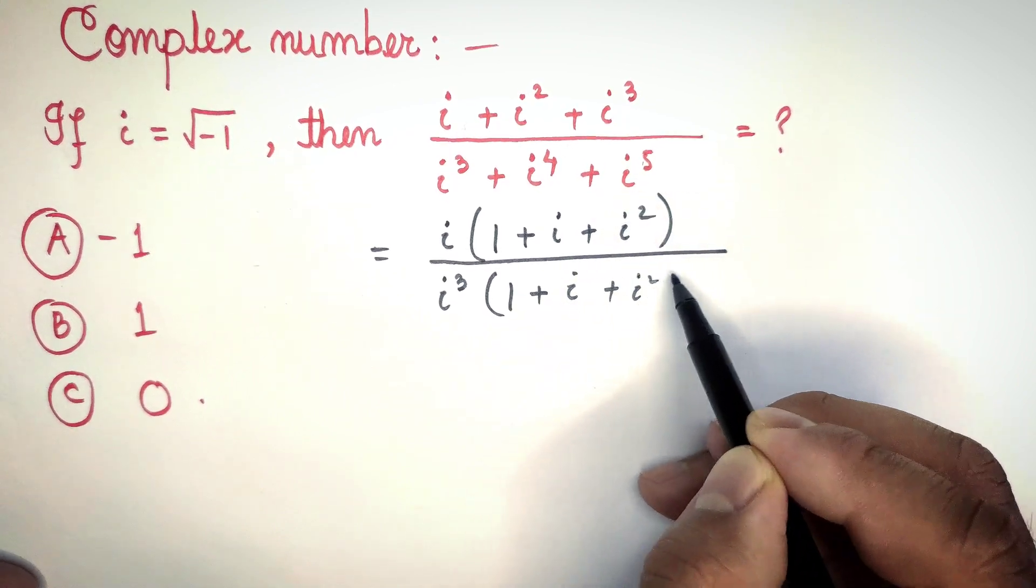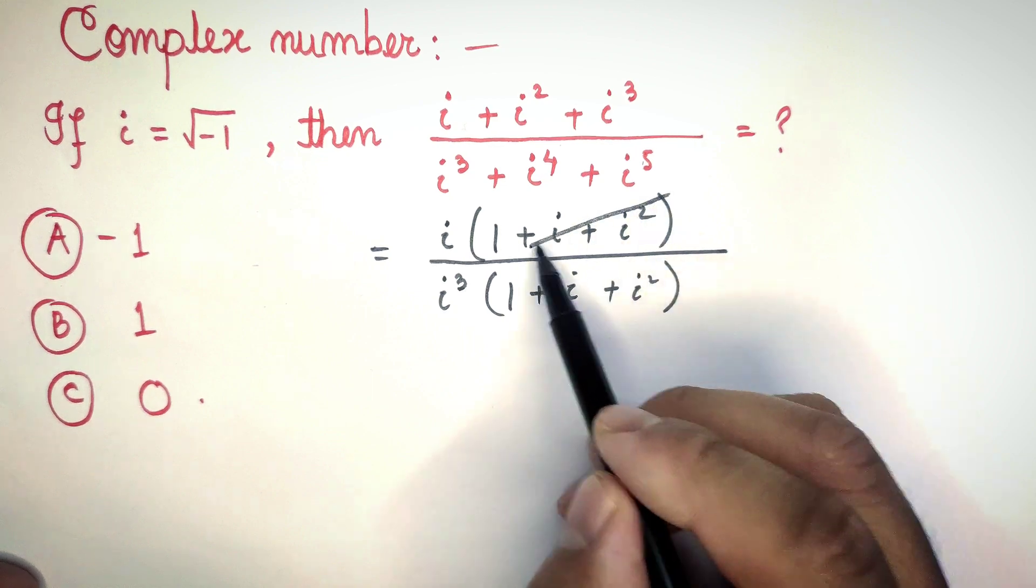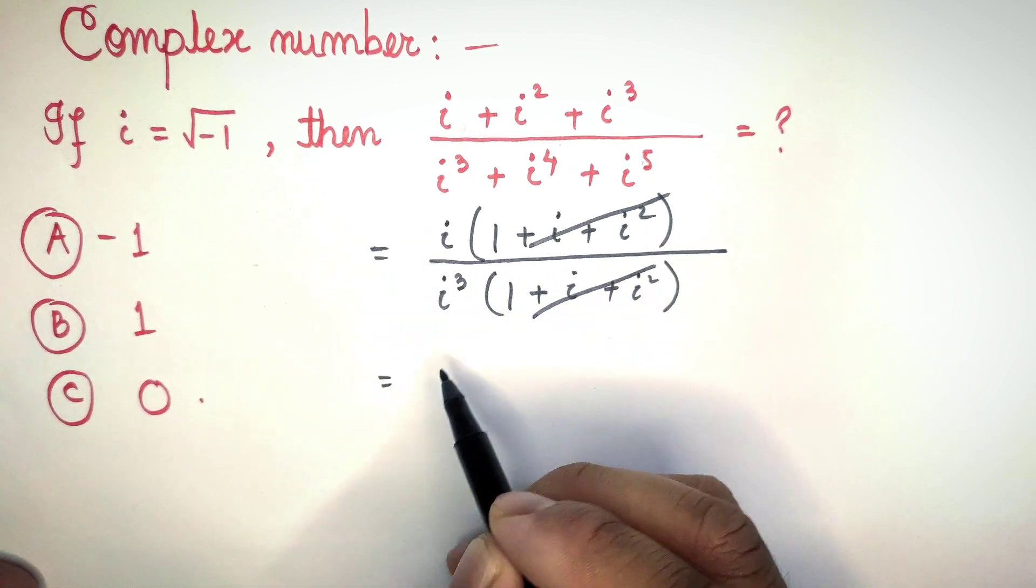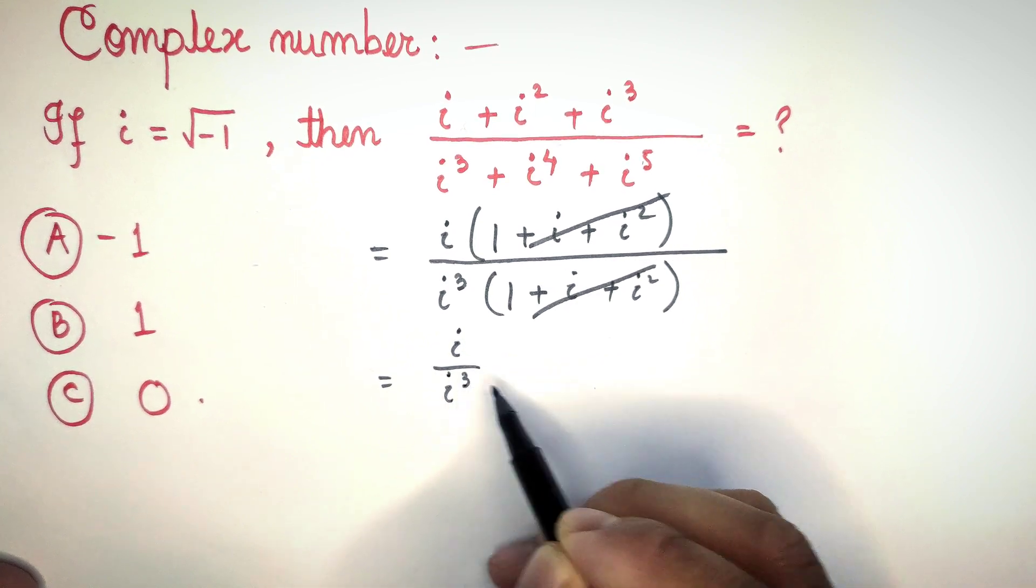So here we can cancel these two. Here remains only the i, i by i cubed. After canceling this to one, we get one by i squared.